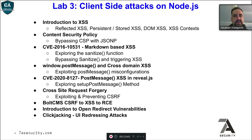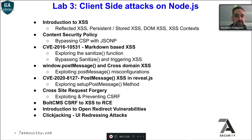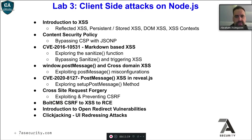In lab 3, we talk about client-side attacks on Node.js: content security policy, bypassing CSP with JSONP endpoints, markdown-based XSS, Windows postMessage, some case studies with known CVEs from 2020. We also have some cross-site request forgery examples, and today we will do the Vault CMS cross-site request forgery — from XSS to remote code execution. We also cover introduction to open redirect vulnerabilities and clickjacking.